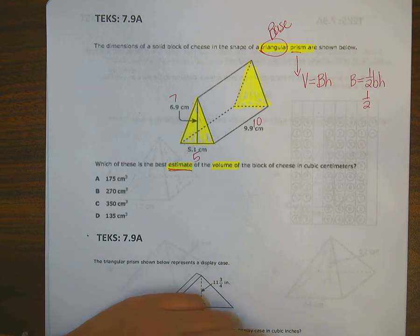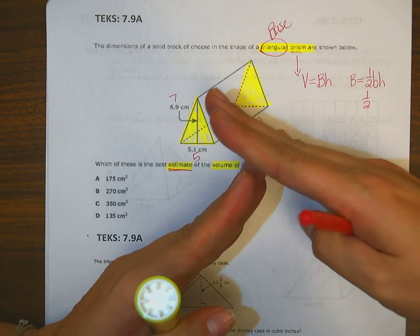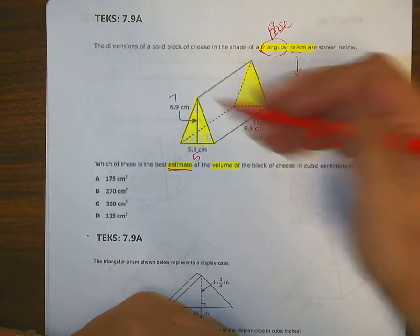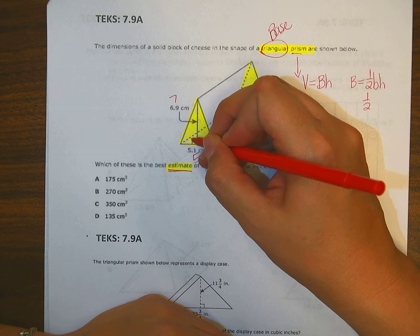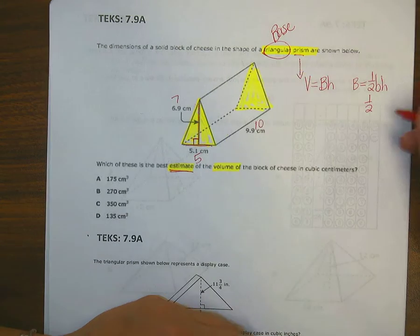So, base and height are always created by a right angle. Okay, right angle, these are perpendicular lines. This little symbol is not in there, but I can easily see that these two numbers together make my right angle.